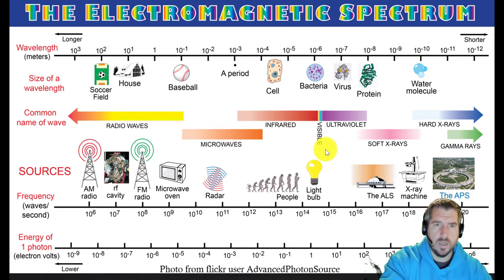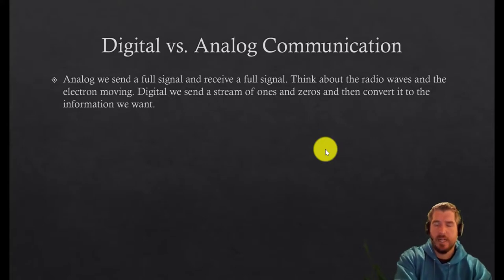But we've already talked about wireless and wired communication. Let's think about like I just said, digital versus analog. So analog, we send a full signal and receive a full signal. Think about the electron moving around, right. And then digital, all we send is a stream of ones and zeros and then convert it to the information we want.